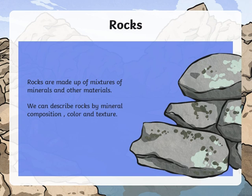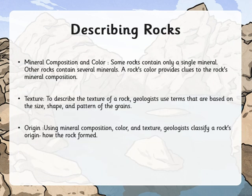Rocks are mixtures of minerals and other materials that solidify to form rocks. When we want to describe the color or the mineral composition, we have to think about the several minerals present in the rock, and each color can give a clue to the mineral composition. As for the texture, we can talk about the pattern of the grains, or the size and the shape of those grains. We can use color and texture to identify the rock type.